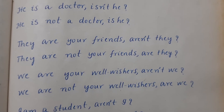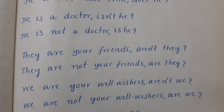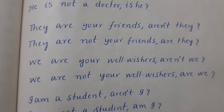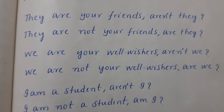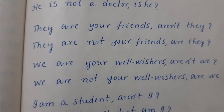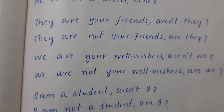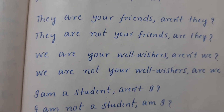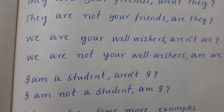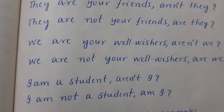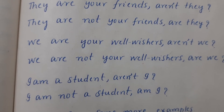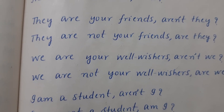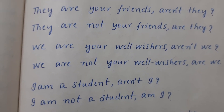Why do we use question tags? When we expect the listener to agree with our statement, we use question tags. Now this is an exception: 'I am a student, aren't I?' — not 'am I?' When the statement is positive and the subject is 'I', we use the negative question tag 'aren't I', not 'am I'. For the negative: 'I am not a student, am I?'